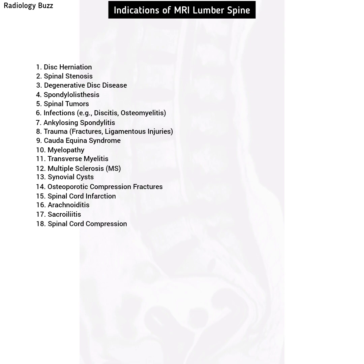Spinal cord compression, whether by bone fragments or tumors, results in pain, weakness, numbness, and potentially paralysis. Spinal arteriovenous malformation (AVM) and spinal cord cavernous malformation, both involving abnormal blood vessel clusters, can lead to pain, weakness, and bleeding into the spinal cord.